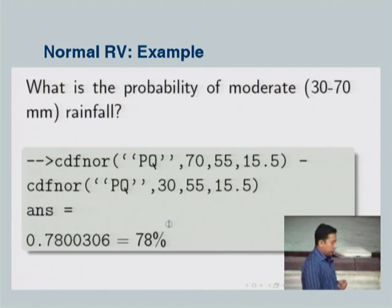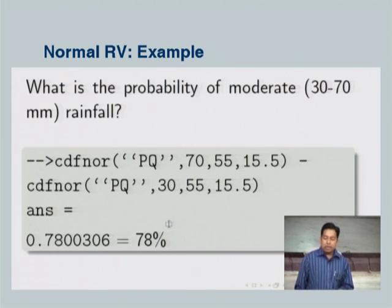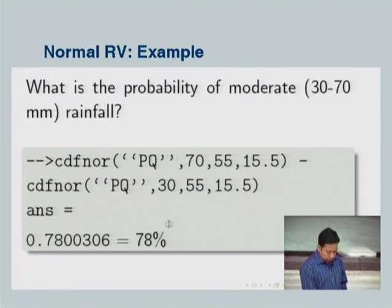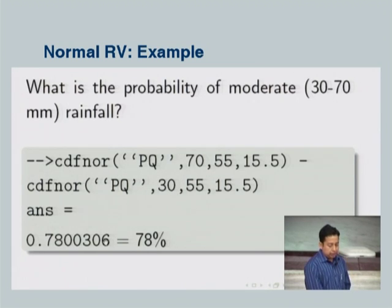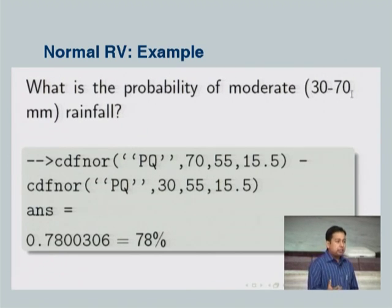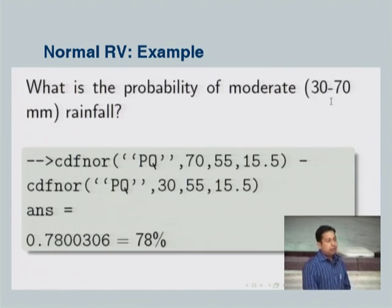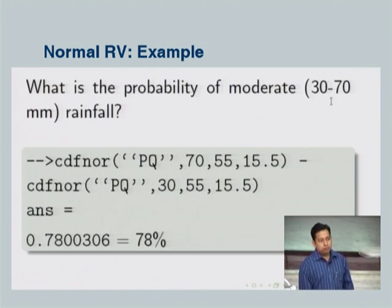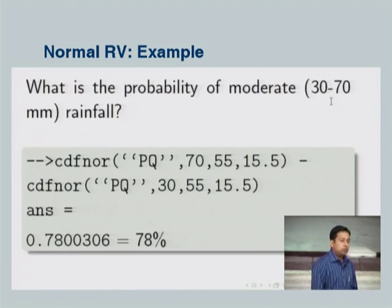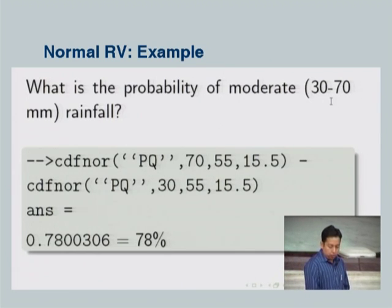What is the probability of moderate rainfall, defined as 30 to 70 mm? That is the CDF at 70 minus the CDF at 30 for the same distribution — we get about 78 percent. Since 55 is the mean and 30 to 70 is the range around the mean, most data — 78 percent — is concentrated around the mean, which is the measure of central tendency.